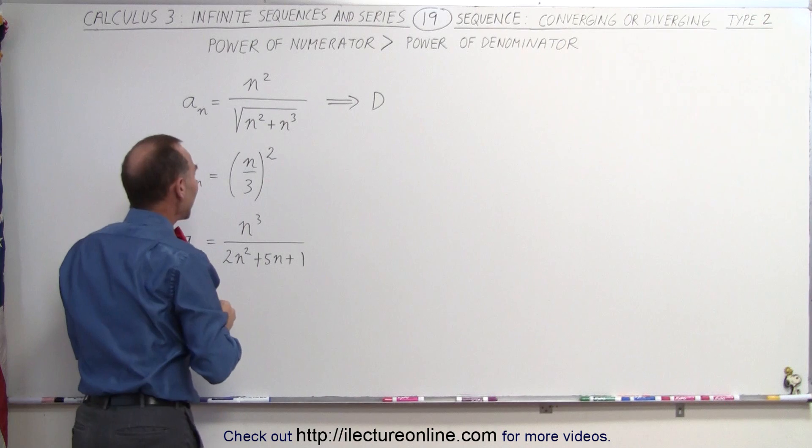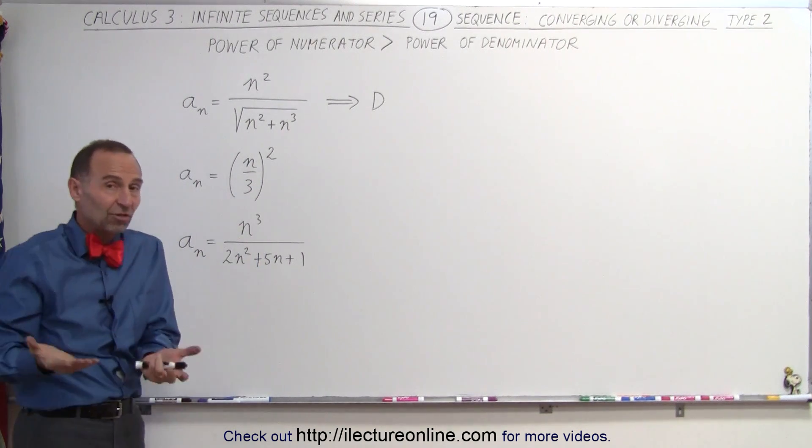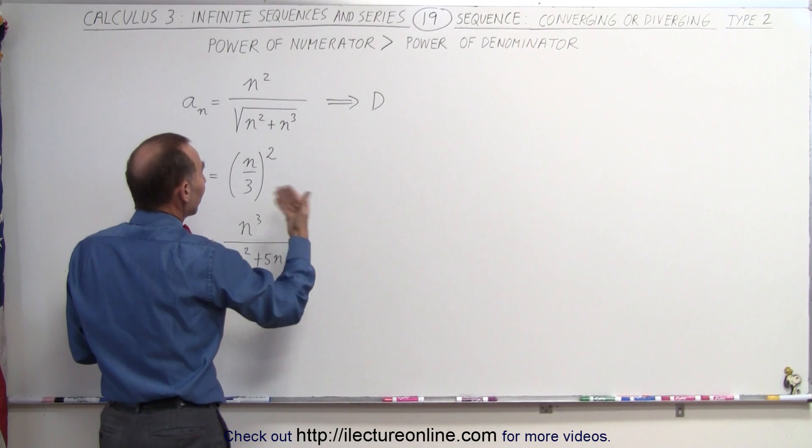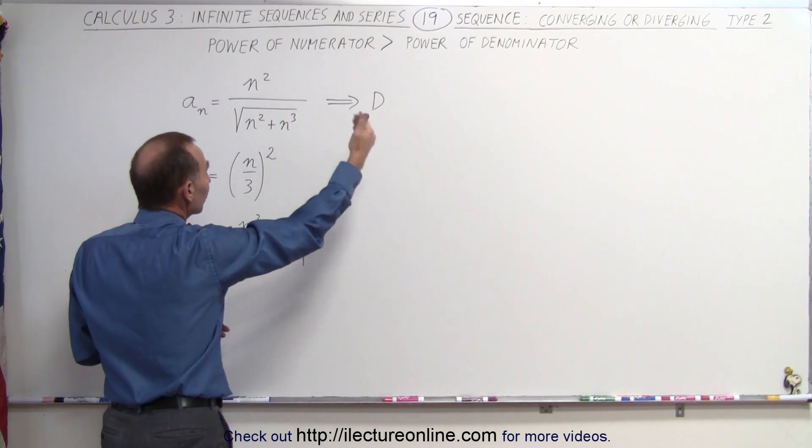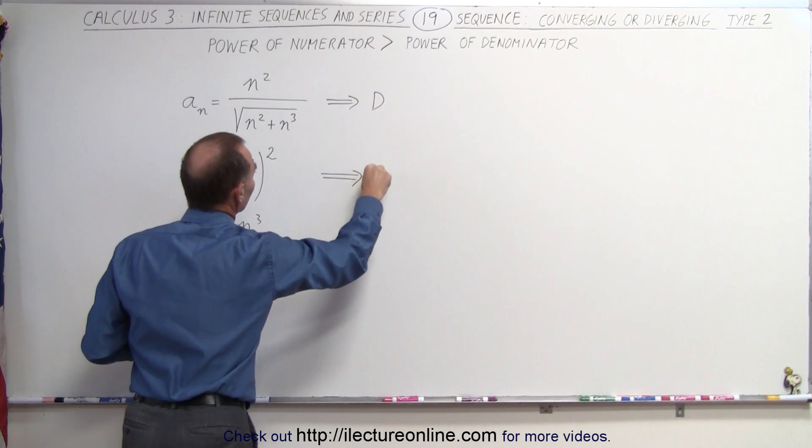Over here we have n over 3 quantity squared, so we have n squared in the numerator and n to the zero power essentially in the denominator, which means that this sequence will also diverge because the numerator will grow much faster than the denominator. Therefore, this diverges.